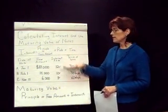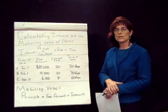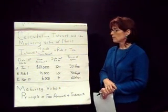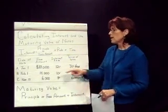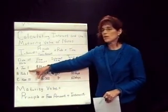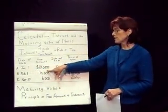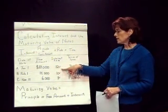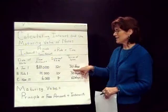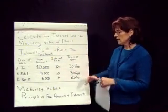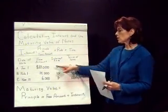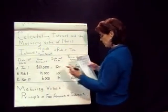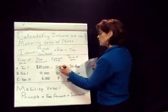Let's look at each one of these individual notes. The date of the first note is January the 1st. The face amount is $10,000, the interest rate is 12%, and it's due in 30 days. To get the interest, we're going to take $10,000 times 12%, which gives us $1,200.